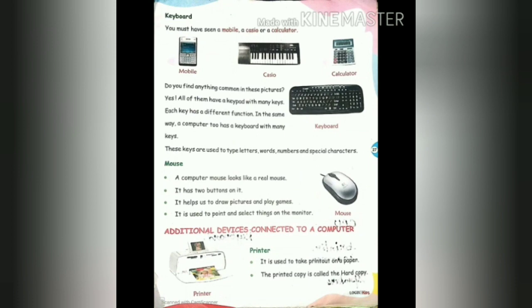The third part is a keyboard. You must have seen a mobile, a Casio, or a calculator — all of them have a keypad with many keys. In the same way, a computer has a keyboard with many keys. You can see alphabets, numbers, enter key, shift key, control key, and arrow keys — so many keys make up the keyboard. These keys are used to type letters, words, numbers, and special characters.